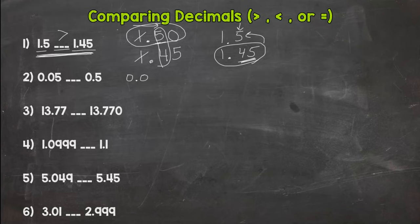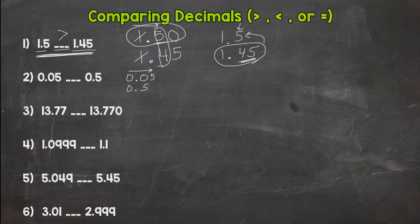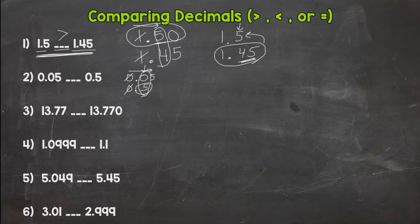Number two: we have five hundredths compared to five tenths. Line up the decimals and look left to right. You might know which one is greater right away, but you need to explain why and in what place. There are no whole numbers to compare, so look at the tenths place: a five in the tenths is greater than a zero in the tenths. Anything to the right doesn't matter once we reach our first difference. You would read this: five hundredths is less than five tenths.